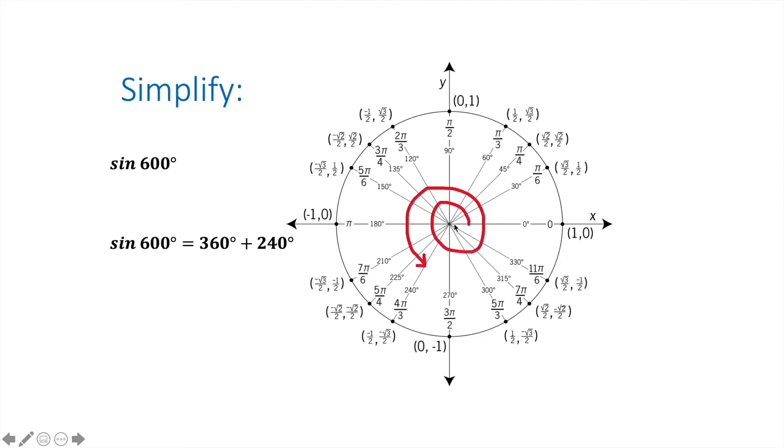So if I were to draw that, it would look like this. We're going to go all the way around the circle once, then we're going to go not quite all the way around, but we're going to go right to 240 degrees. So when we're looking at that, that is the point that we're looking for, 240 degrees there.